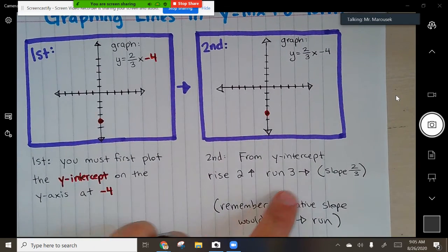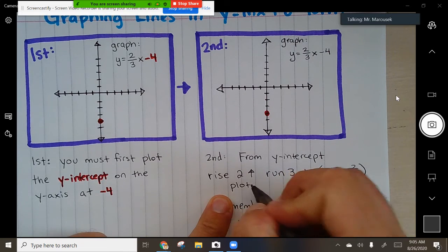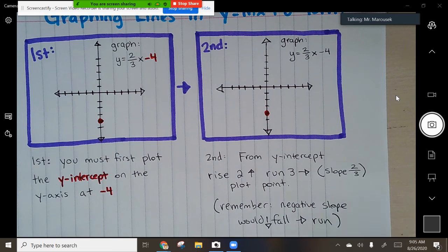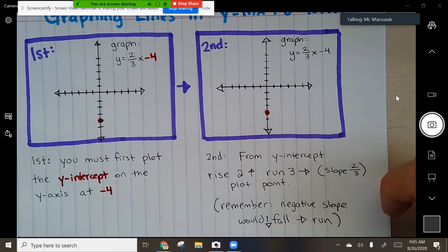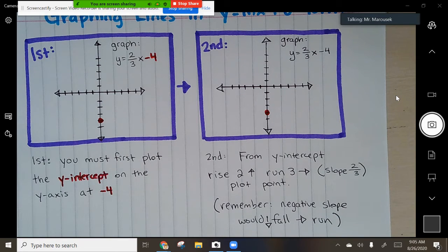So here, from y-intercept, rise to run 3. And I should have put, and plot point. I'm going to give you guys like two minutes to copy this down, and then we'll talk about it. So this is the next step. We haven't done it yet in here. I want you guys to copy this down real quick, and then we'll be done with our notes. Let's stay focused. I see you guys. Let's go.